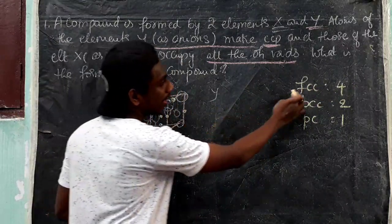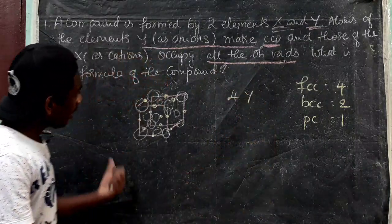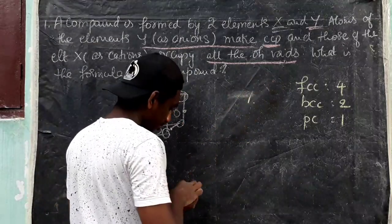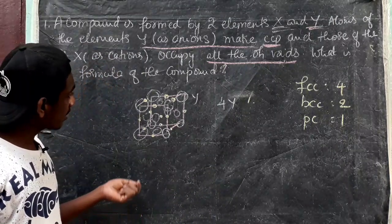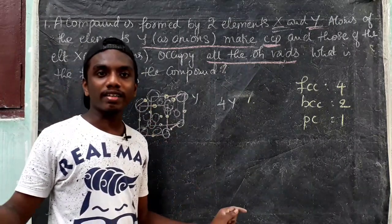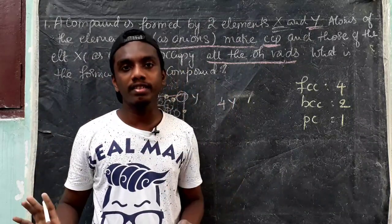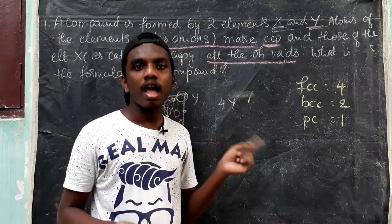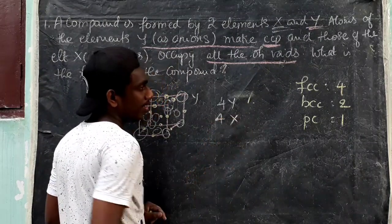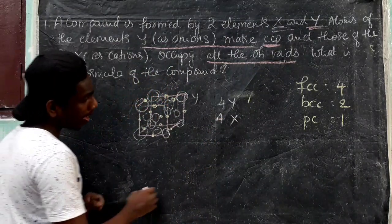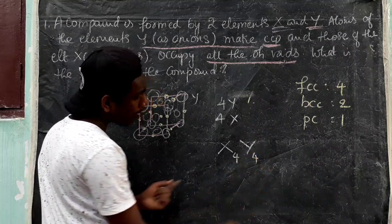There are 4 Y, because the FCC's effective number of particles is 4. The number of octahedral voids equals the number of particles, so there are also 4 octahedral voids. X occupies all octahedral voids, so there are 4 X. With 4 X and 4 Y, the common factor is 4, giving the formula XY.